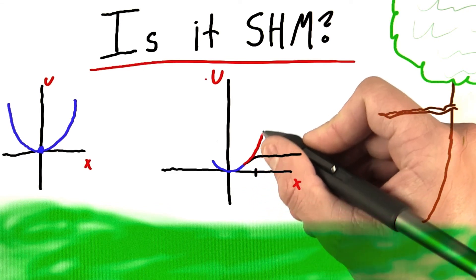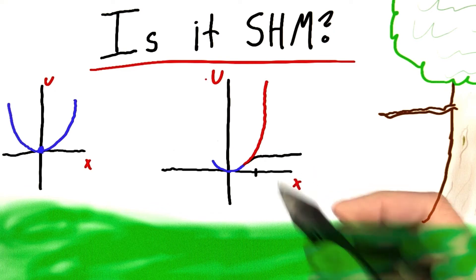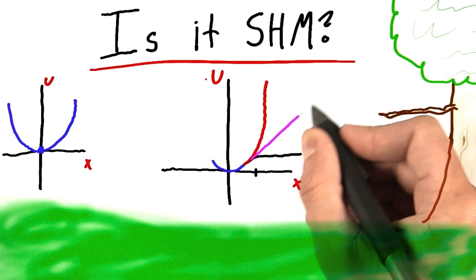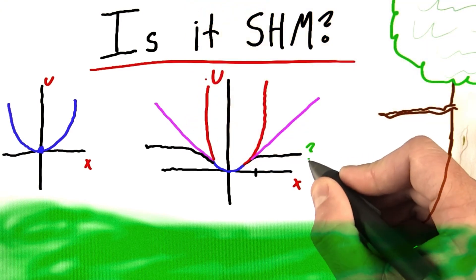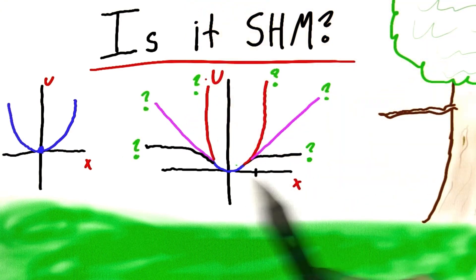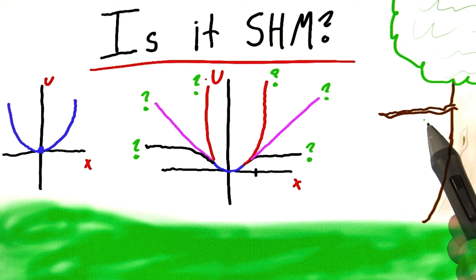Maybe instead, it actually gets really difficult to continue bending the branch. Or maybe it's somewhere in between. Of course, these should all be mirrored on this side. The fact is, we just don't know. The only way we could figure this out, since branches are so complicated, is by doing an experiment.